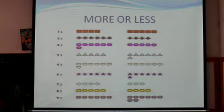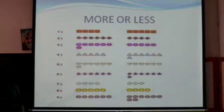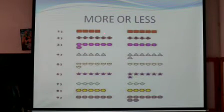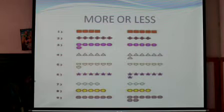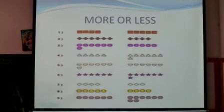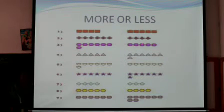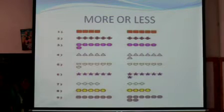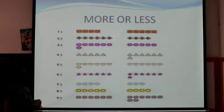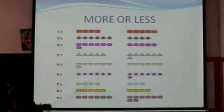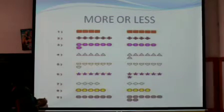Let's see the next one. Here we have a plus sign. How many plus signs do we have? One, two, three, four, five, six — towards your left side you have six. Towards your right side how many do you have? One, two, three, four — four. So four is less compared to six. Put a tick mark on four and circle six because six is the bigger number.